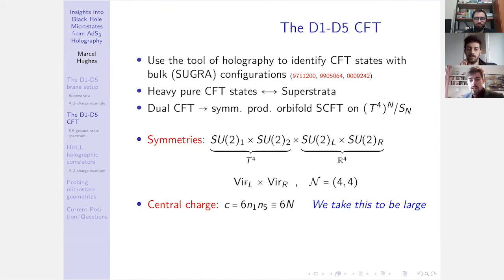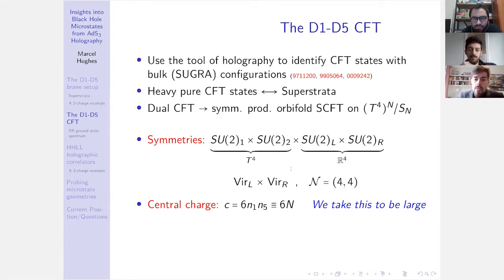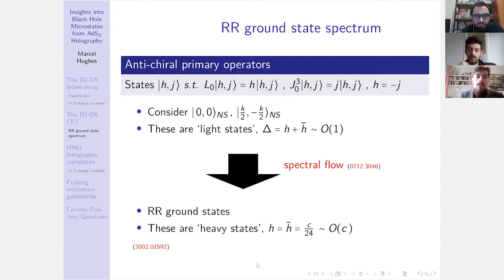The symmetries of this theory: it's a 2D CFT, so we have left and right sectors. We have N=(4,4) supersymmetry. We have R-symmetry SU(2)_L and SU(2)_R, which comes from the R^4 in the brane setup, and then some global SU(2)s originating from the T^4. We will actually use some of these generators to make the states we want. The central charge of this theory is 6N_1 N_5, which we group together and call capital N, giving c = 6N.